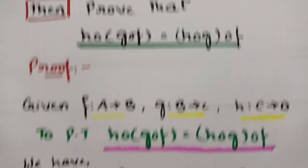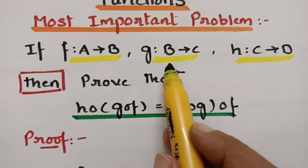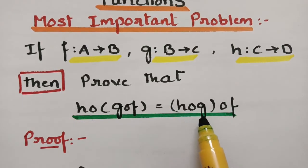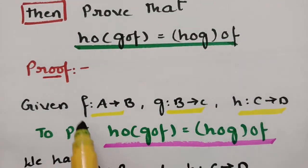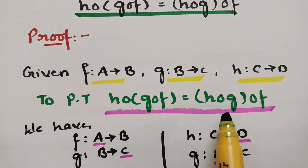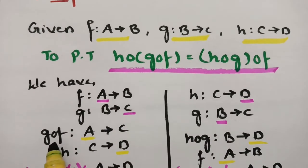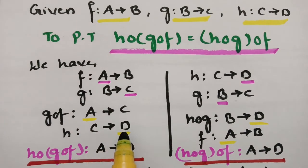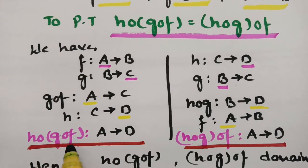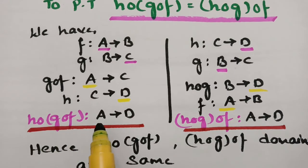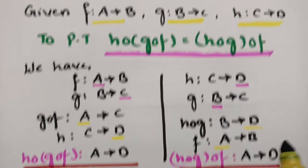It is so simple. Let me explain once again. F maps from A to B, G maps from B to C, and H maps from C to D. It is asked to prove that H∘(G∘F) = (H∘G)∘F. Before showing that two functions are equal, we must check the domains of both functions. G∘F starts with F from A to C, and with H from C to D, so H∘(G∘F) maps from A to D.